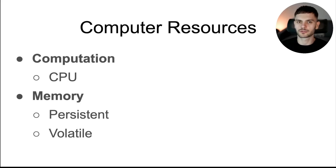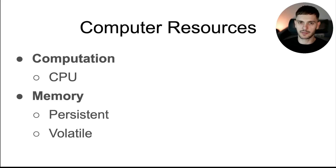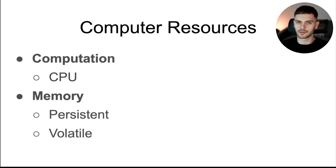First, let's discuss what resources a computer provides. A computer provides two basic resources: computation and memory. Computation is the ability to crunch numbers, the ability to do math, and that's provided by the CPU — the central processing unit. Memory is the ability to store data, and there are two important categories of memory: persistent memory and volatile memory.